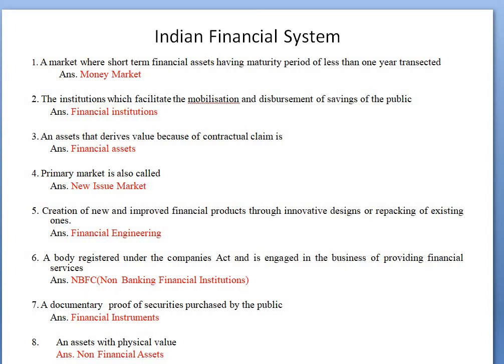An asset with a physical value is called a non-financial asset. Unlike financial assets which derive value from contractual claims, non-financial assets have real physical value. For example, gold and land are non-financial assets. Cash, however, is a financial asset — a paper note does not itself have physical value equivalent to its face value.